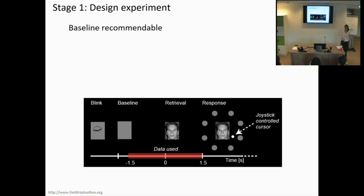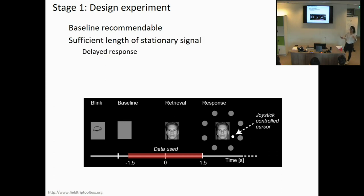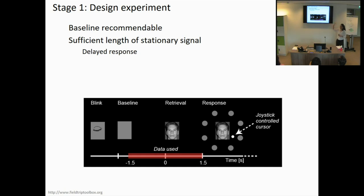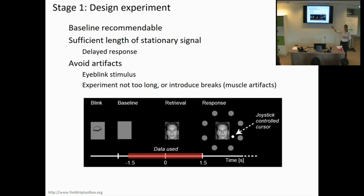Another recommendation is that beamforming makes use of the covariance matrix, so it's important to have a long stretch of data to get a good estimate of the covariance while still assuming a stationary signal. You want a lot of data for a good covariance estimate, but you still want to make sure you're measuring the cognitive process you're interested in. Make the time window of interest as clean as possible from other cognitive processes and artifacts. They also had a blinking time period where people were instructed to blink to reduce later eye movements, and of course don't make it too long because when people get tired they tend to move a lot.